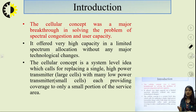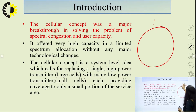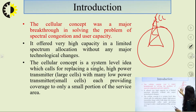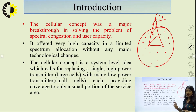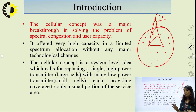Let us start with the introduction — what is the need of this cellular concept. Earlier, before the cellular concept, the entire coverage area was covered by a single high-power transmitter, and all the subscribers in that area were assigned different frequency channels. The main disadvantage was spectral congestion because each subscriber used a different frequency band, so there was no concept of frequency reuse.